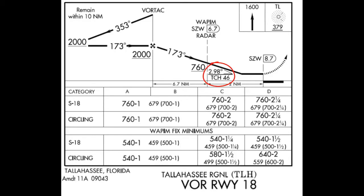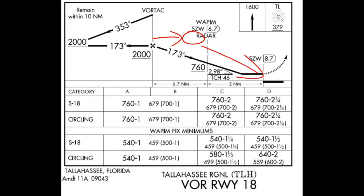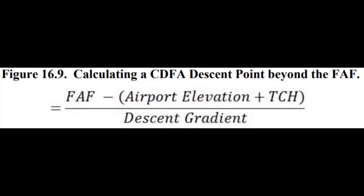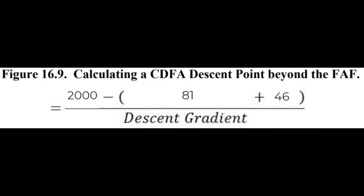What about an approach with the VDA published inside of the FAF? It's still simple but requires a little more math. All you have to do is divide the desired altitude to lose by the desired descent gradient. This gives you how many miles prior to the runway to start your descent in order to get a constant descent from your final approach fix altitude to the runway at the prescribed threshold crossing height. The equation is: take the final approach fix altitude and subtract the airport elevation and threshold crossing height, then divide that by the descent gradient, which is just the glide slope angle times 100.